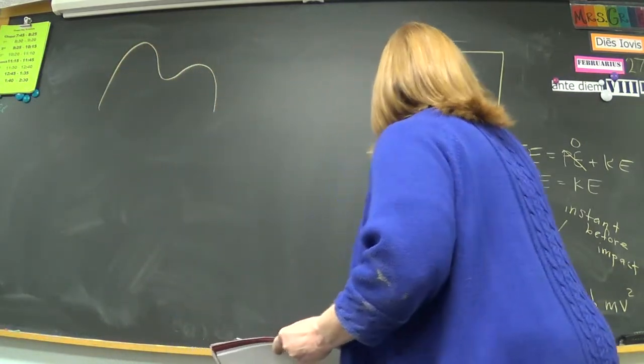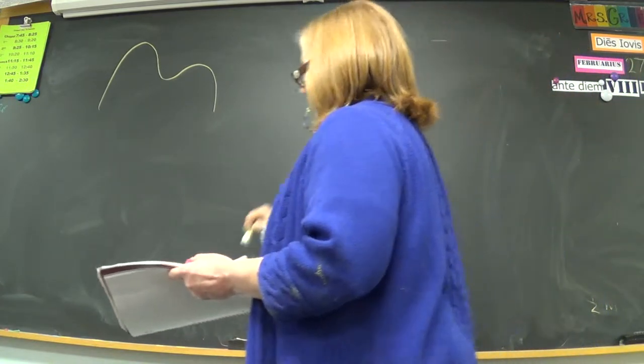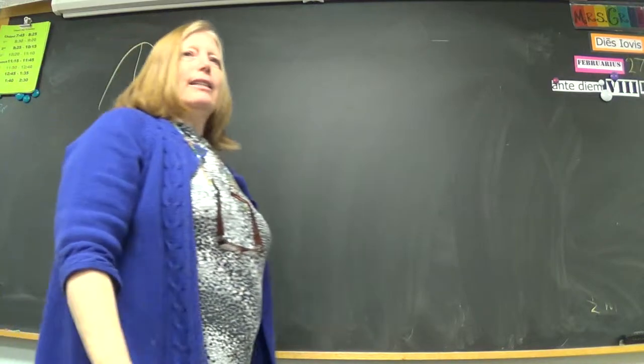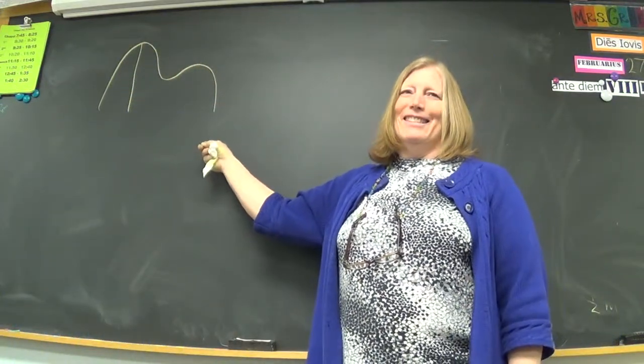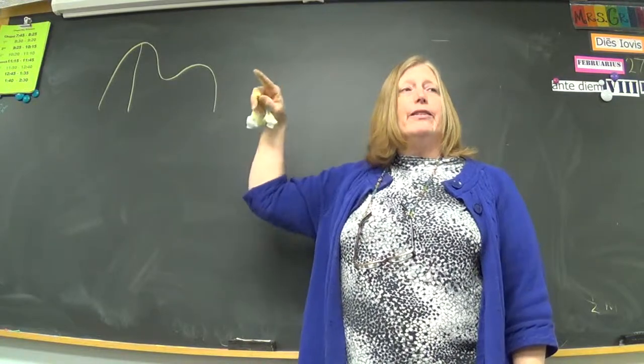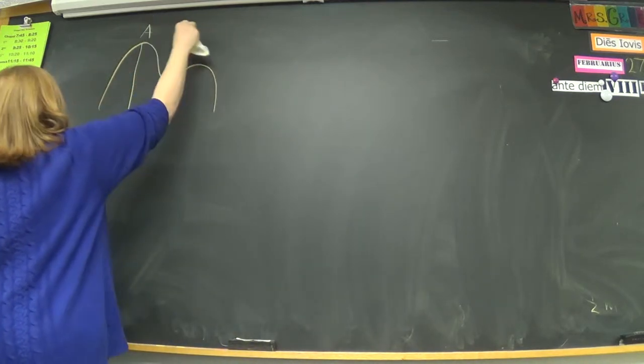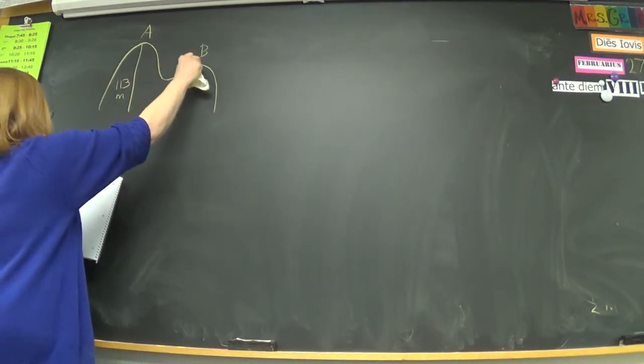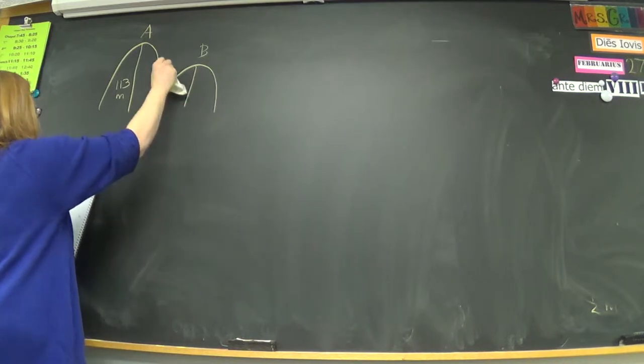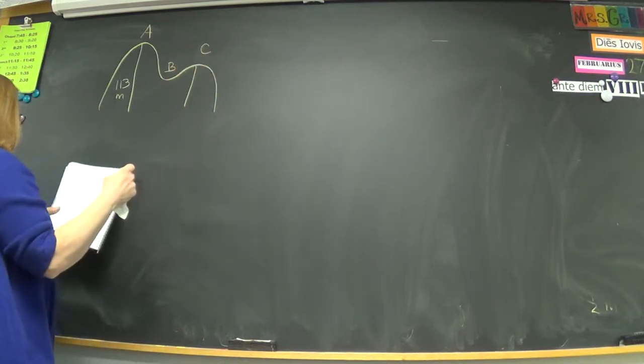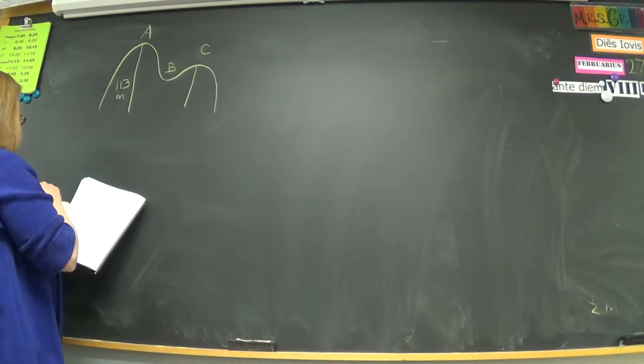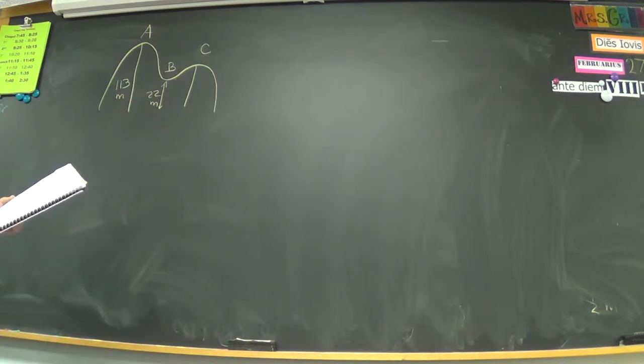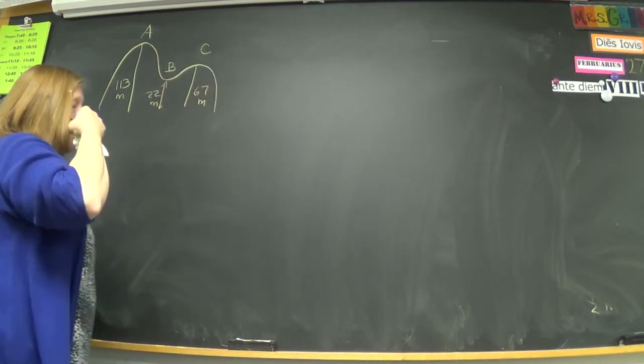All right. Back to this one. Let us look at... For reference, I'm going to call the first hill A and the second hill B. The height of hill A is 113 meters. So, write this down as I do. Height of hill B is... Actually, I'm going to call the valley B and the second hill C. Can you change that, please? And the height at the valley is 22 and the height at C... I can't read my writing. I think it's 67.